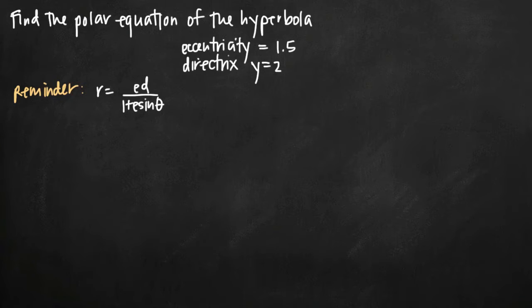Today we're going to be talking about how to find the polar equation of a hyperbola. In this particular problem, the eccentricity is equal to 1.5 and the directrix has the equation y equals 2.